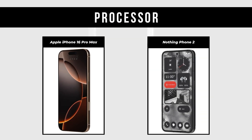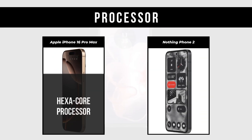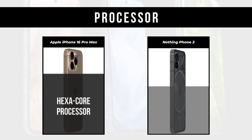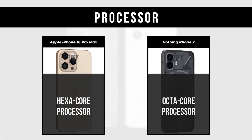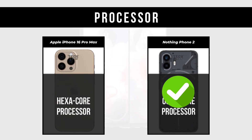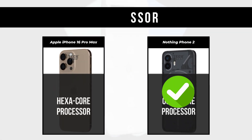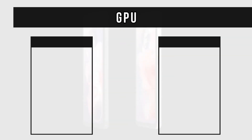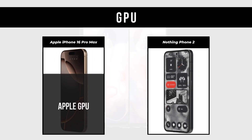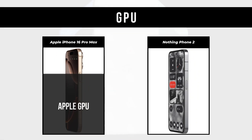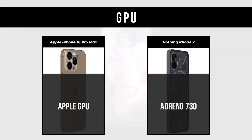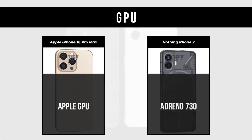Processor: Apple iPhone 16 Pro Max is a Hexa-Core Processor; Nothing Phone 2 is an Octa-Core Processor. GPU: Apple iPhone 16 Pro Max is Apple GPU; Nothing Phone 2 is Adreno 730.